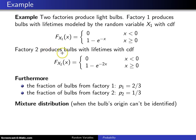Likewise, factory two produces bulbs that have lifetimes with a cumulative distribution function capital F_X2 of x is zero for negative lifetimes and one minus e to the minus two times x for x greater than or equal to zero.